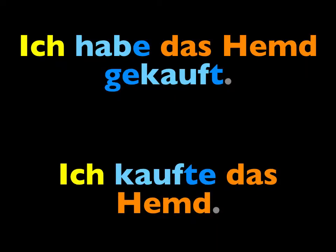So here are the two past tenses. They can both mean 'I bought the shirt': ich habe das Hemd gekauft, oder ich kaufte das Hemd. The difference is that the one on top is what people use in conversations. The one on the bottom is found mostly in written forms — if you were to read a novel, a fairy tale, or perhaps an article in the newspaper. That's why the conversational one is the one you need to learn the most, and the one we've been learning all along for that reason.